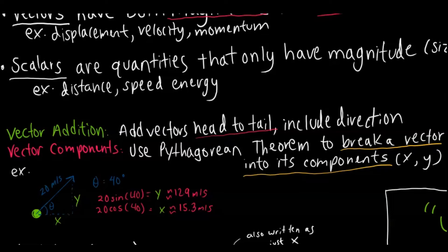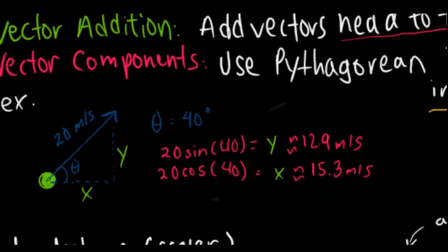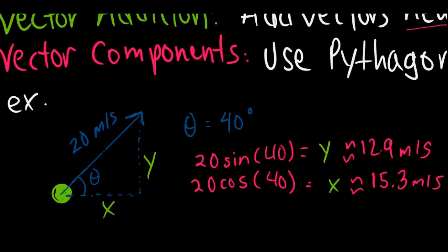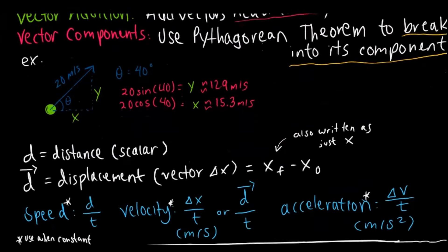The more important part of vectors in terms of the actual exam is being able to break them apart into components. Once you break them apart into components, you want to use the Pythagorean theorem to analyze it. For example, let's say we had a ball launched with 20 meters per second of initial velocity. Because the force of gravity is acting upon the Y direction but not the X direction, it affects it differently. In order to analyze its motion, you need to break it apart into components — you know the angle measure, so you can use trig to find the different velocity components.